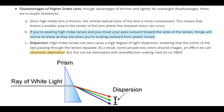If you're wearing high-index lenses and you move your eyes outward toward the sides of the lenses, things will not be as sharp as when you are looking through standard plastic lenses. So one disadvantage is that peripheral vision won't be as crisp compared to other lens materials.